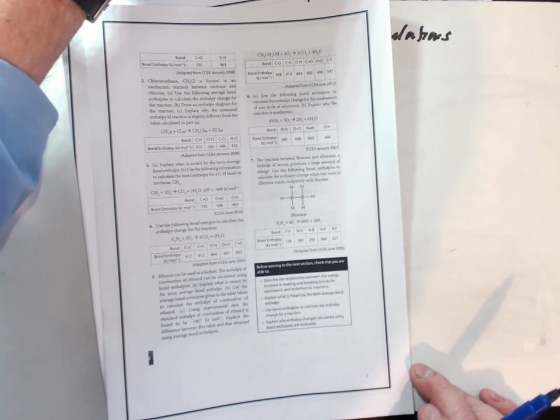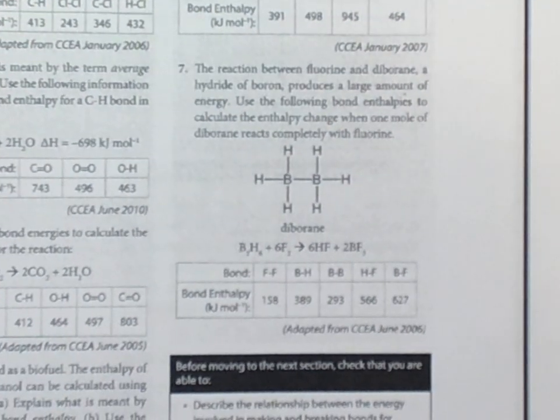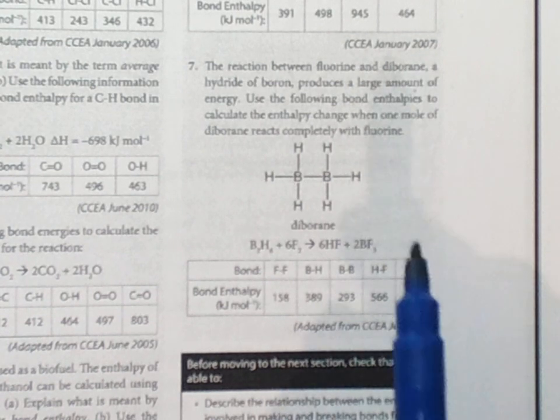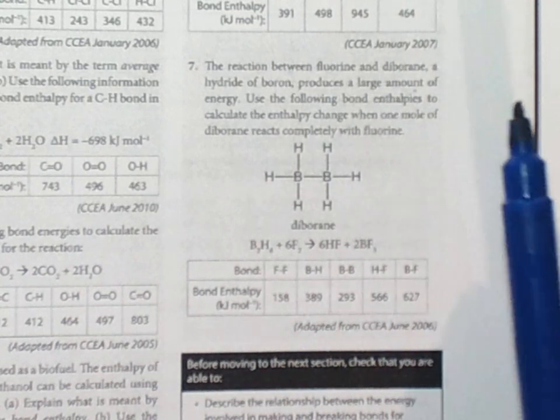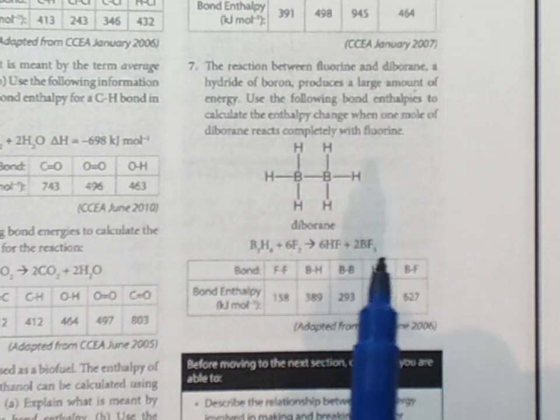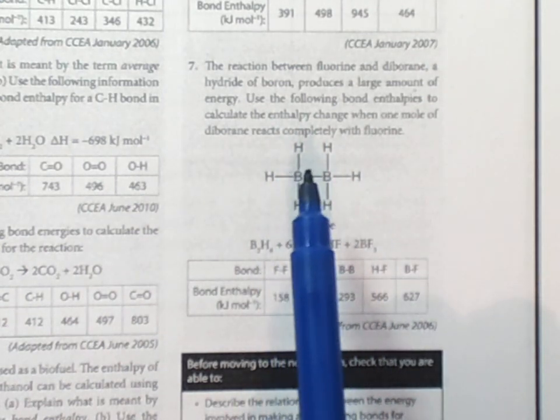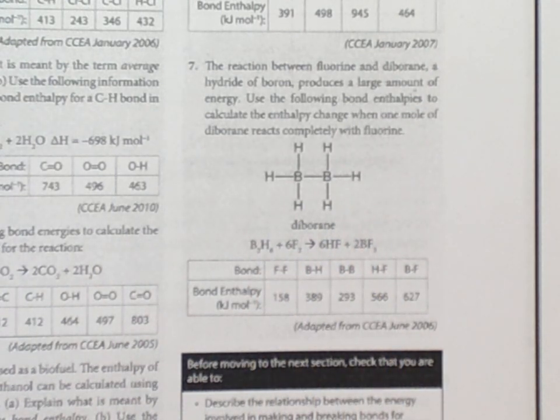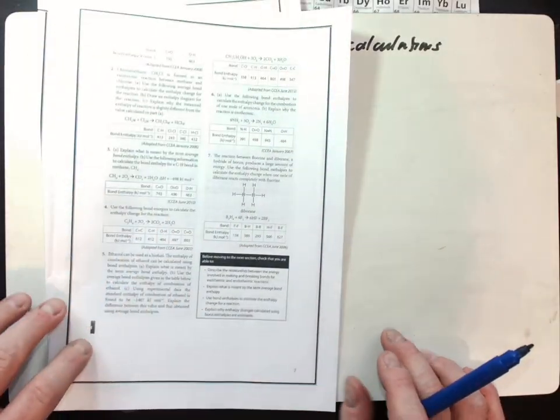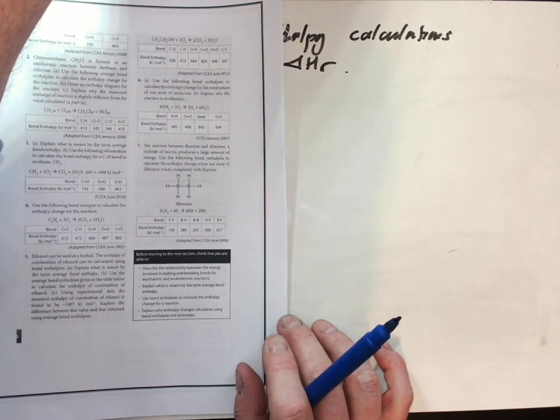We'll have a look at this one. We'll have a go at number seven. The reaction of fluorine with diborane produced a large amount of energy. Use the following bond enthalpy to calculate the enthalpy when one mole of diborane reacts completely with fluorine. This time we've been given the structure of this, but we haven't been given the structure of these. For an A-level student these should be relatively easy to work out. You would be expected to be able to do that.